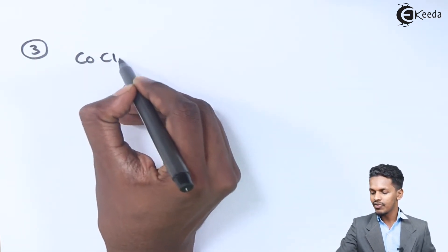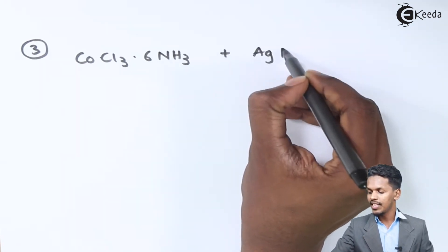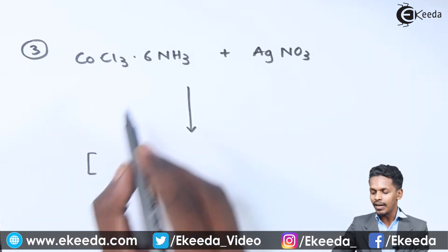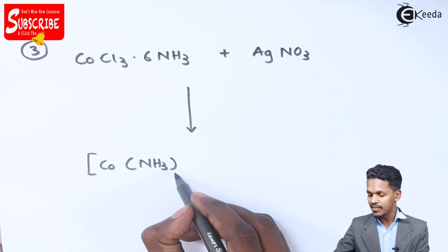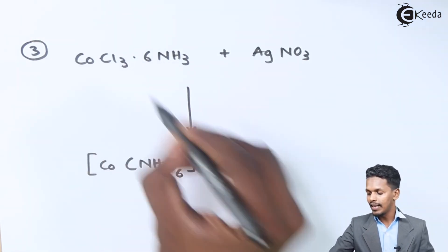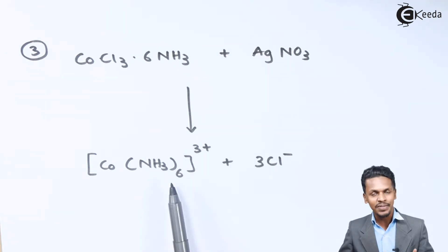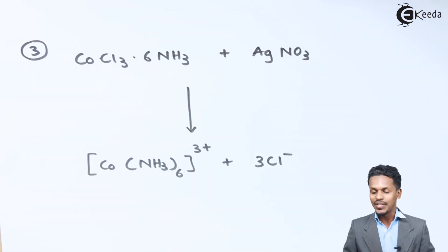The third example: CoCl₃·6NH₃. Treated with AgNO₃, it ionizes into four ions. Cobalt is surrounded by six NH₃ groups, and all three Cl⁻ ions ionize, acquiring a 3+ charge on the complex. This gives four ions: one complex and three Cl⁻, with coordination number six — three primary valencies and six secondary valencies.